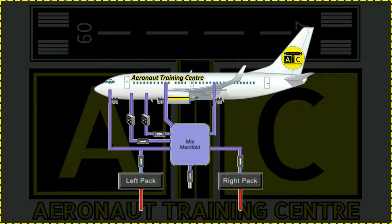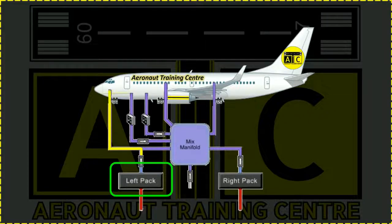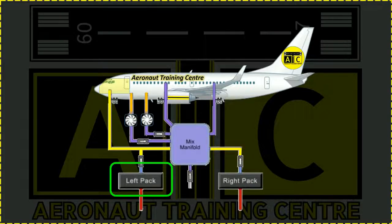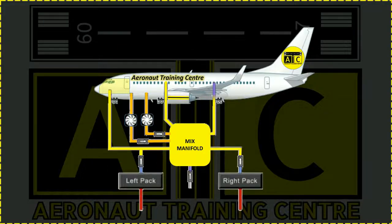Air in the flight deck is 100% fresh air from the left air conditioning pack. Air in the forward and aft passenger cabin is a mixture of fresh air from the right air conditioning pack, the mix manifold, and a certain amount of recirculated cabin air. If the left pack becomes inoperative, the flight deck automatically receives conditioned air from the right pack.